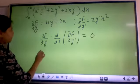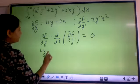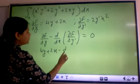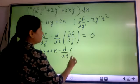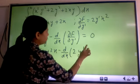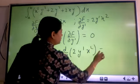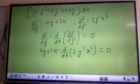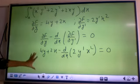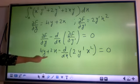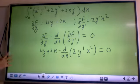Substitute it over here. You will get 4y plus 2x minus d/dx of (2y' x²) is equal to 0. So these are the two basic steps. Now I have to form an ODE from this relation. Let us try to simplify this.